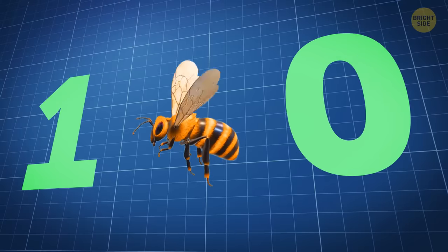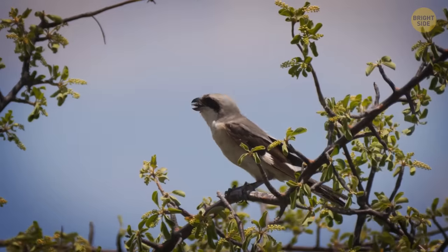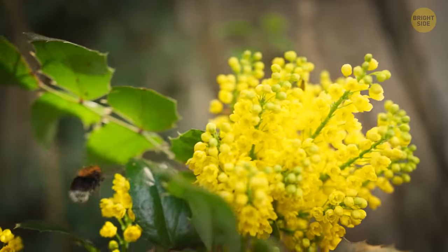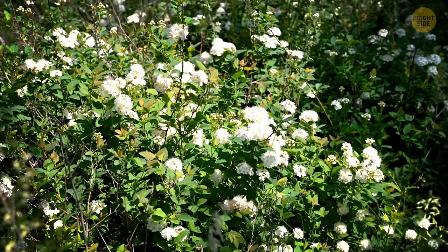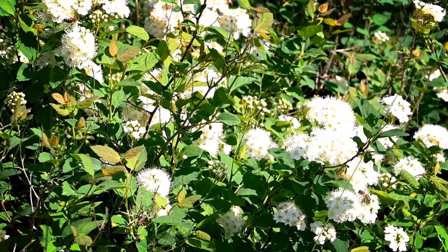In further tests, the bees showed they could tell the difference between one and zero. This might help them keep track of predators or find food sources more efficiently. And if bees can understand zero, who knows how many other animals out there can do the same?